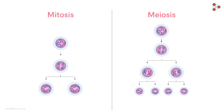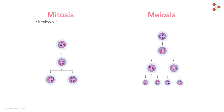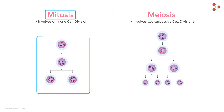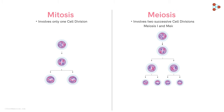Looking at comparative images, we can easily notice the most basic differences between the two. The first is that mitosis has only one cell division, while meiosis involves two successive cell divisions. That means mitosis is a single-step division, while meiosis is a two-step division, resulting in meiosis having two phases: meiosis 1 and meiosis 2.